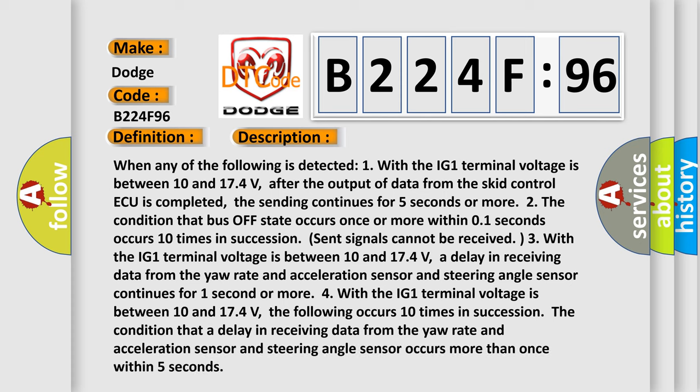When any of the following is detected: one, with the IG1 terminal voltage between 10 and 17.4 volts, after the output of data from the SCID control ECU is completed, the sending continues for five seconds or more.